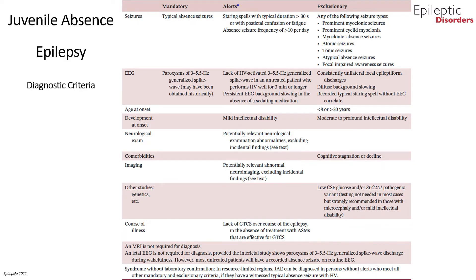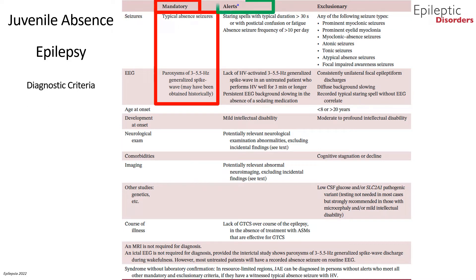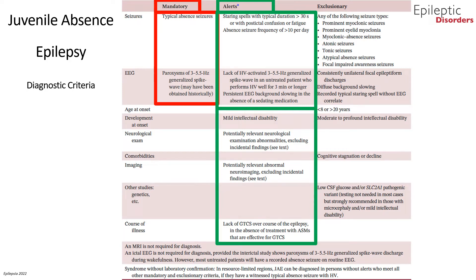This slide shows the diagnostic criteria for juvenile absence epilepsy. The mandatory criteria include typical absence seizures and paroxysms of 3 to 5.5 Hz generalized spike and wave discharges on EEG. Alerts that should prompt the clinician to consider alternative diagnoses include staring spells with duration greater than 30 seconds or with post-ictal confusion, absence seizure frequency greater than 10 per day, EEG findings showing lack of hyperventilation-activated spike and wave discharges, and persistent background slowing.